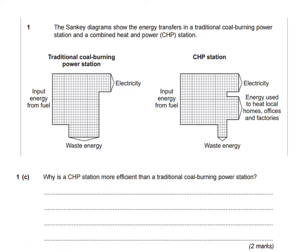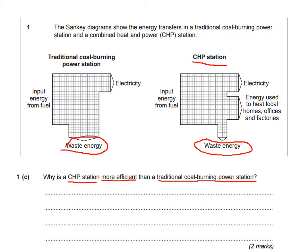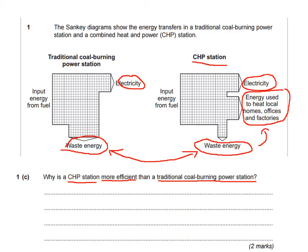The next question asks: why is a CHP station more efficient than a traditional coal burning power station? If I just read this without the diagrams I'd struggle, but the diagrams help. The waste energy is what differs between them. I need to mention waste energy and make that comparison. The electricity produced is actually the same, so I'd focus on the waste energy and note that the CHP uses that energy to heat local homes, offices, and factories — that should get the two marks required.